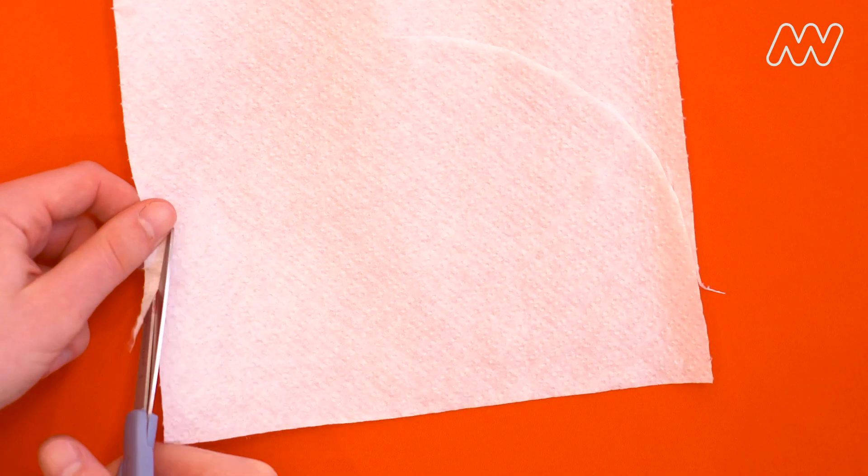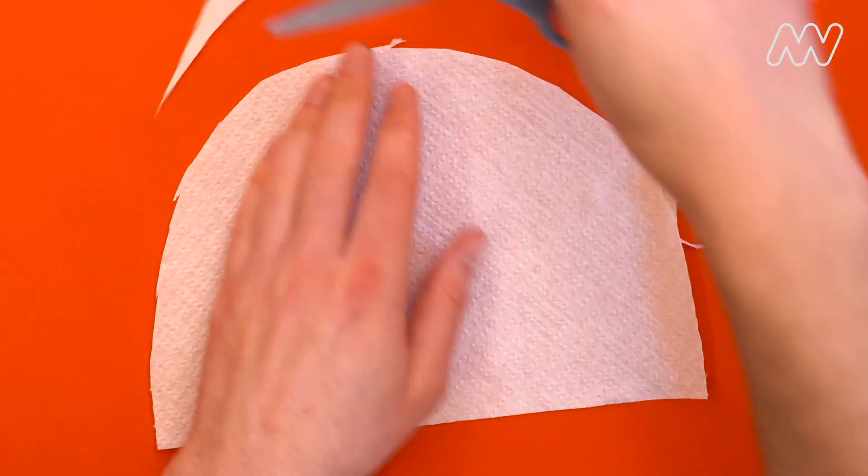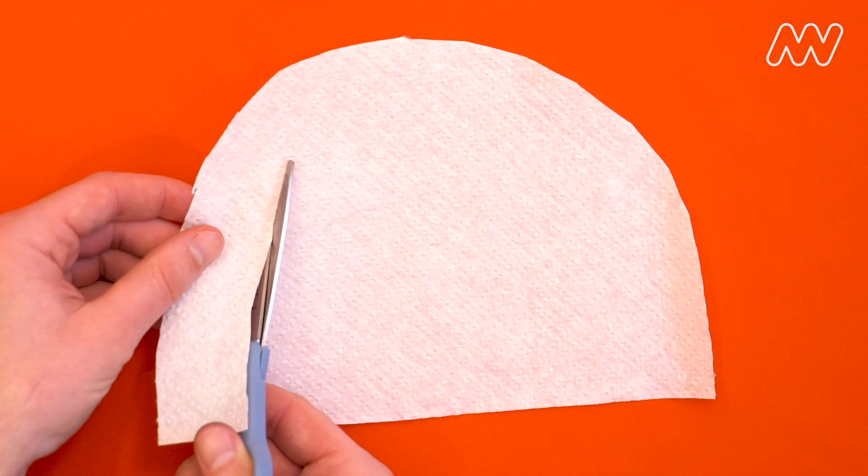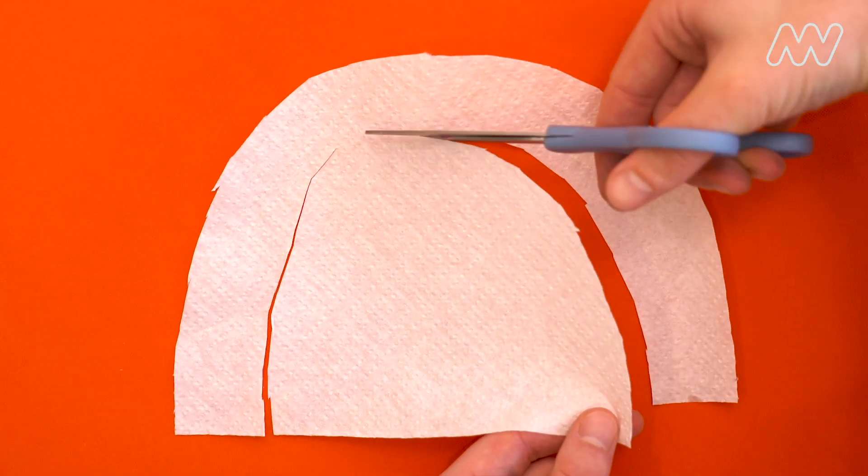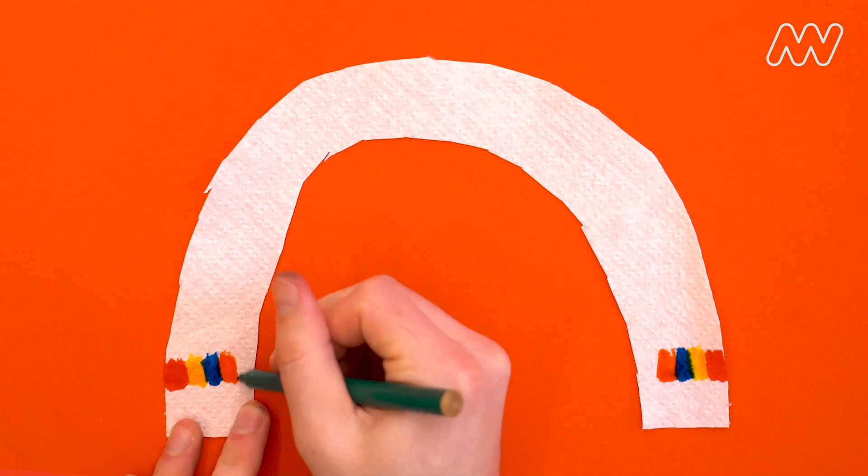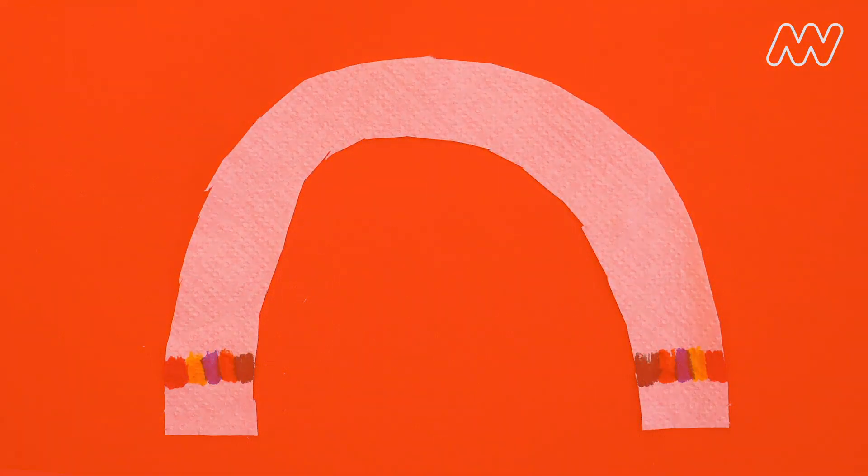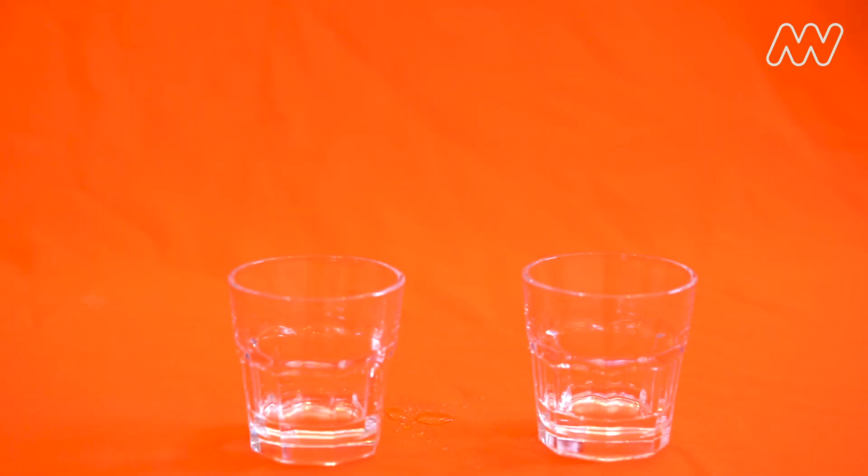Now we can use capillary action to create a rainbow. This time round, you'll need to cut your absorbent paper into the curved shape of a rainbow. Mark out the paper with all the colors of the rainbow and have two glasses of water side by side.